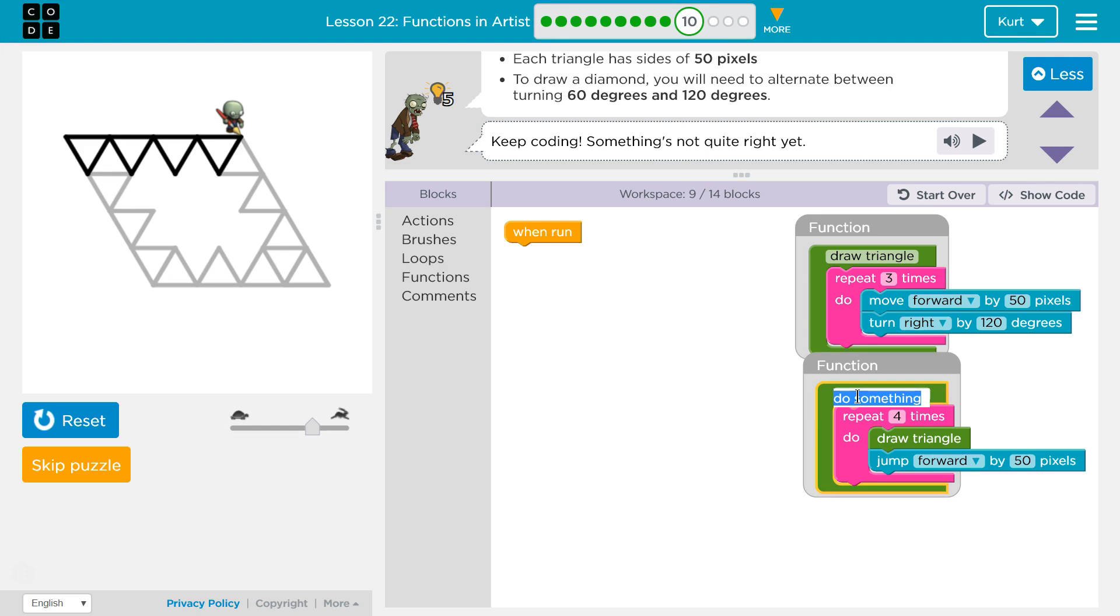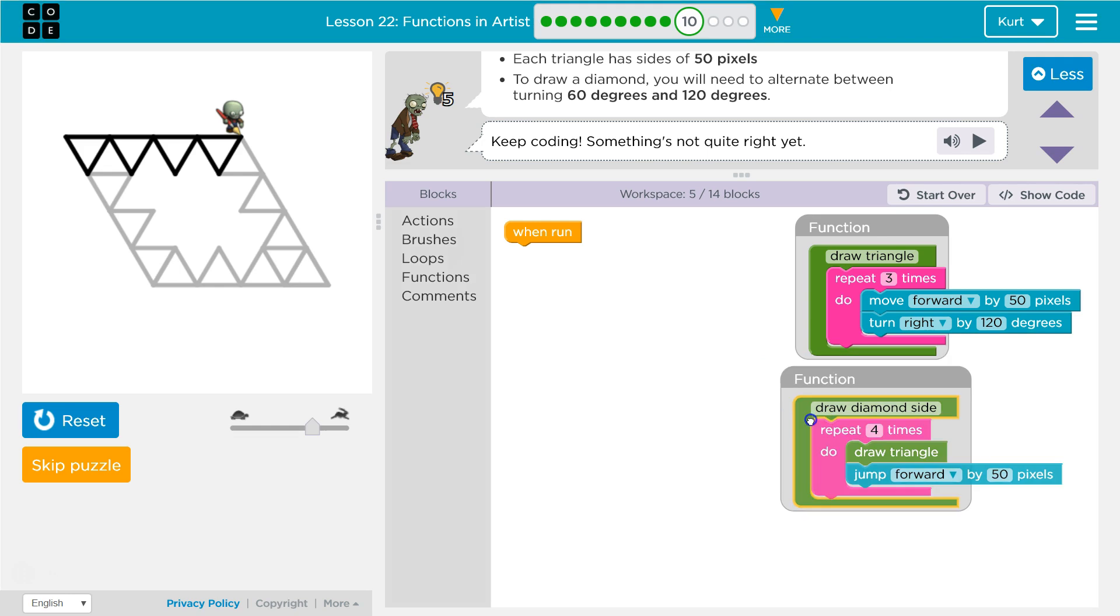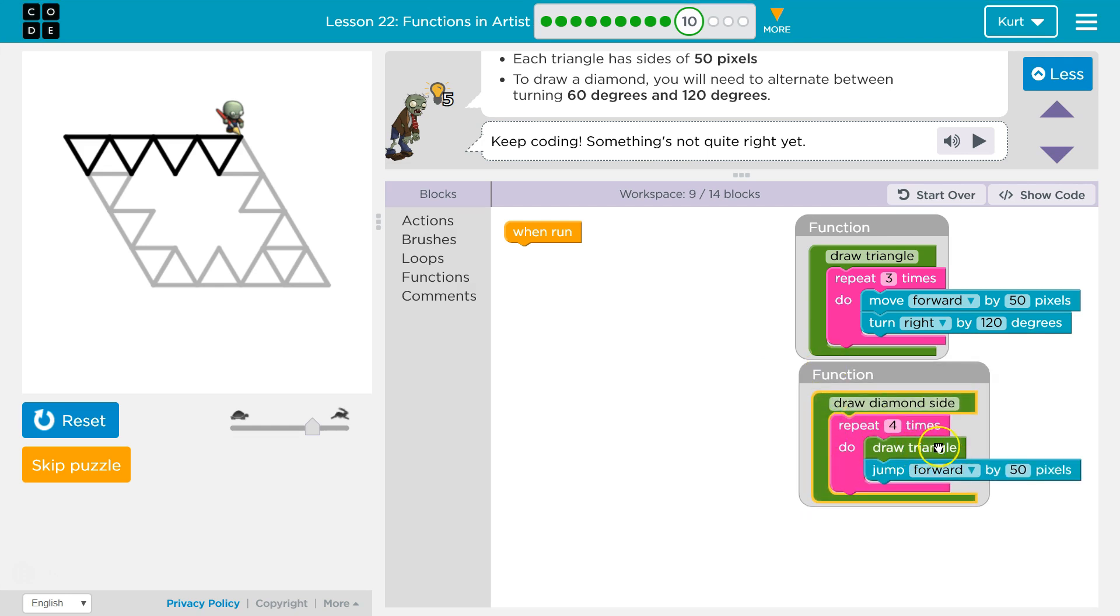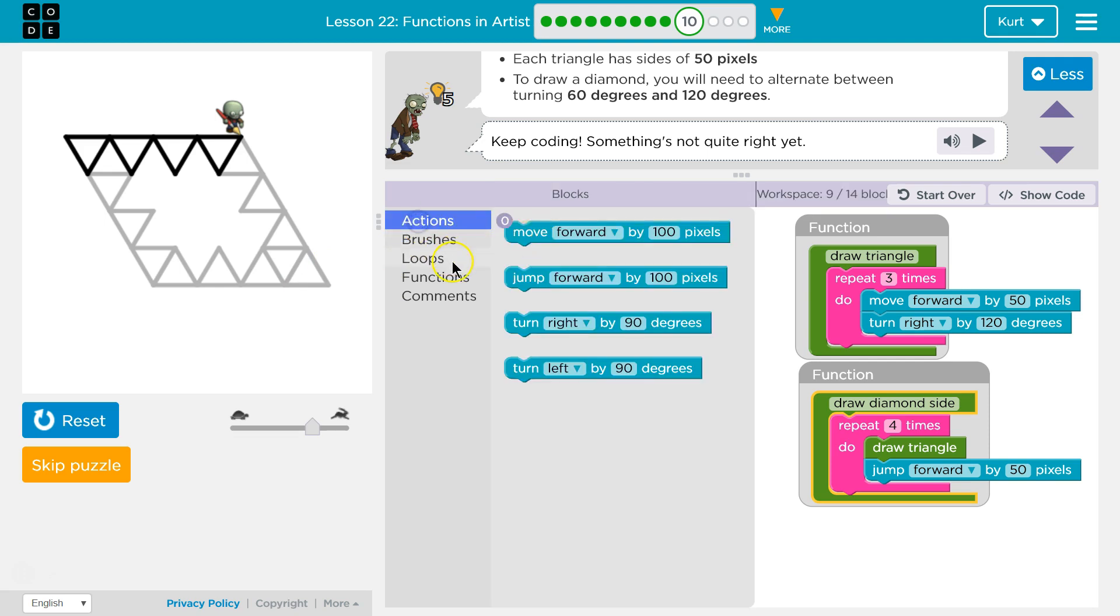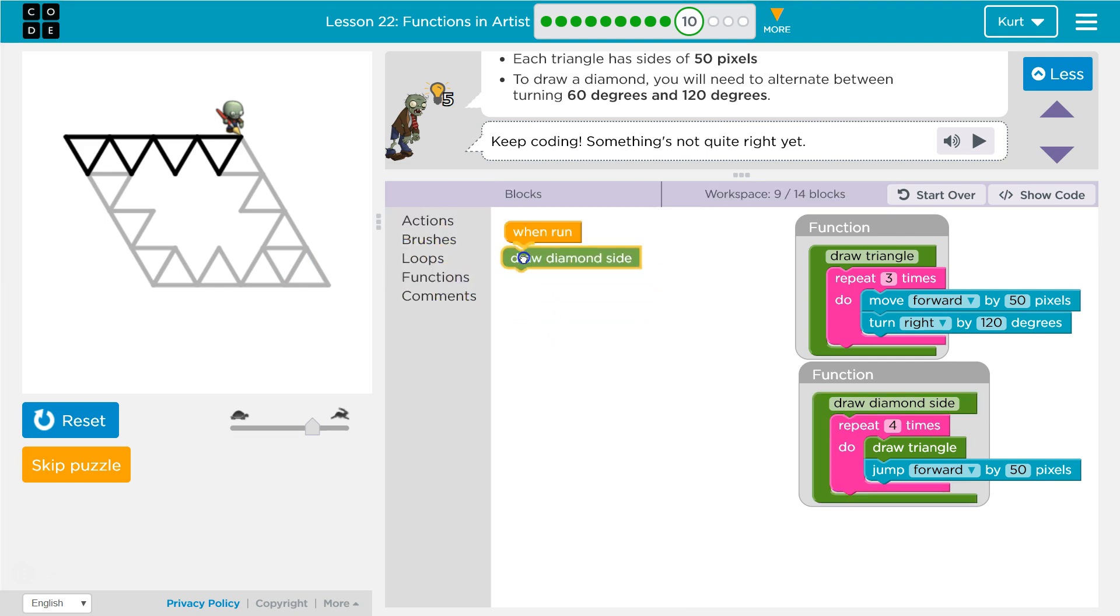So, it's good for a function, but we need to do different stuff in between each time we ask it to run. So, let's say, I don't know, draw diamond side, maybe, would be the name of my function for this. And draw diamond side is creating the side of the diamond by drawing the triangle four times and moving along. So, once we do that, we're going to want to draw a diamond side.